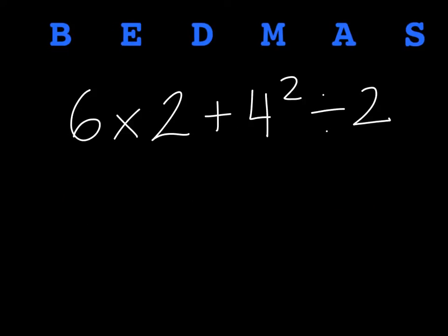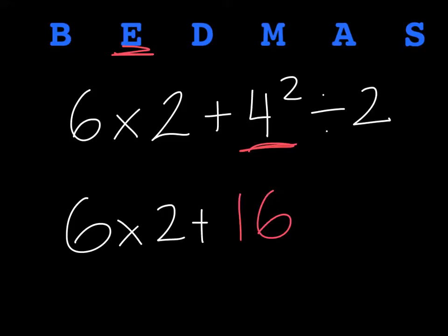Now we've taken our next step and we're ready to move ahead in the equation. Our next step is going to be any exponents we see. And sure enough, we do have one, four to the exponent two. So I'm now going to solve that. Four to the exponent two is like four times four which is sixteen. So my expression is now going to be six times two plus sixteen divided by two.